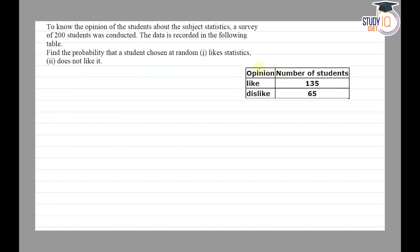So firstly, we have a table given here with opinion and number of students. We will see the total number of students is 200.